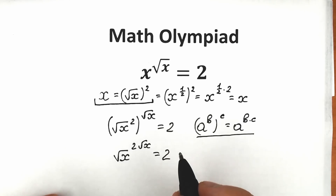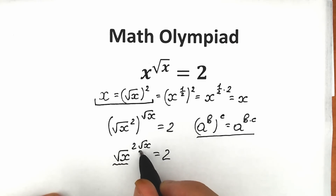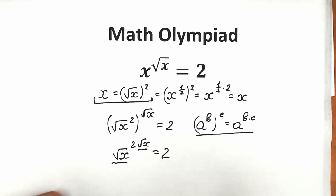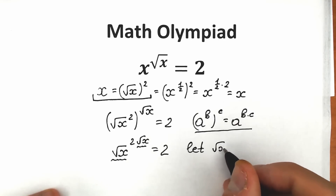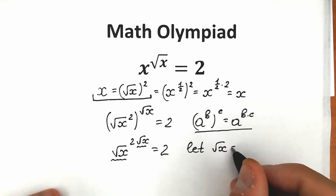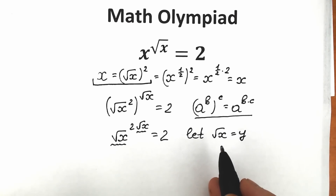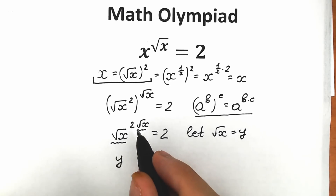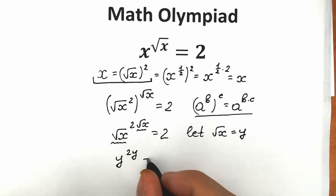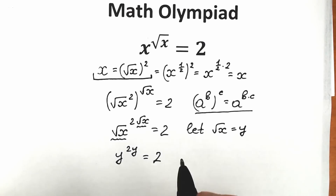Looking closely, we have square root of x appearing twice — both as the base and in the exponent. Since we have the same expression square root of x in both places, we can use substitution. Let y equal square root of x. Plugging in, we get y to the power 2y equal to 2.